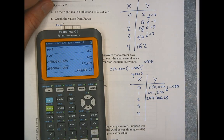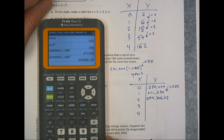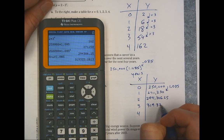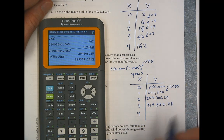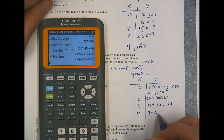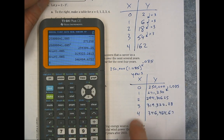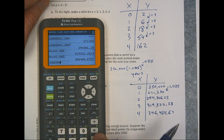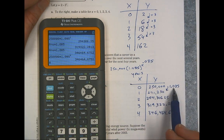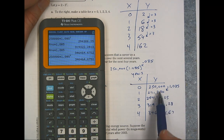For year two: 250,000 times 1.085 squared = $294,306.25. You could just take the previous number in your calculator and hit times 1.085. Year three rounds to approximately $319,422.28. Year four: $346,464.67 rounded up. You can either go one at a time, multiplying by the growth factor 1.085, or go back to the original equation 250,000 times 1.085 raised to x and just change x to whatever it needs to be.